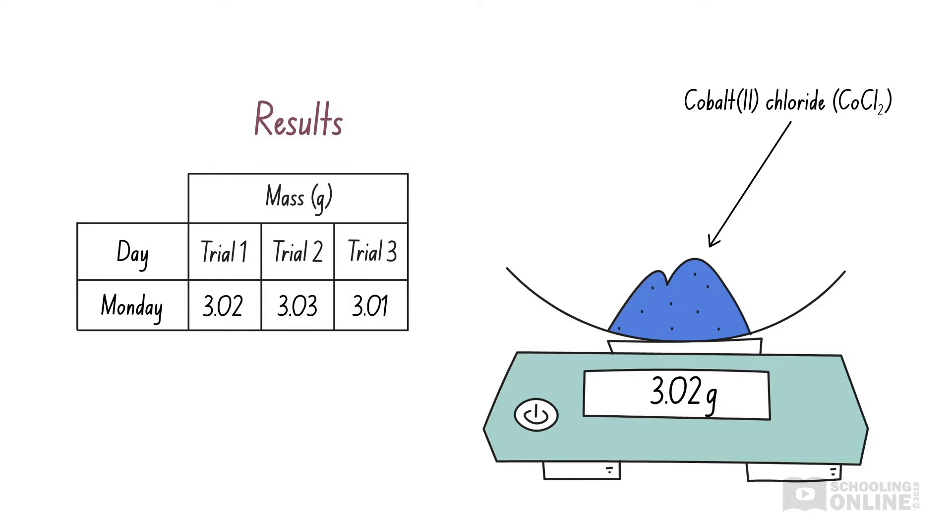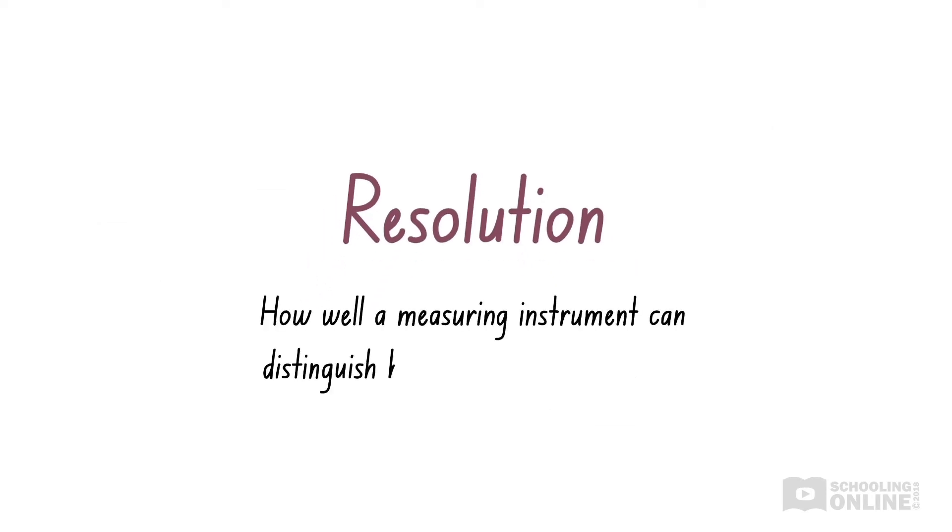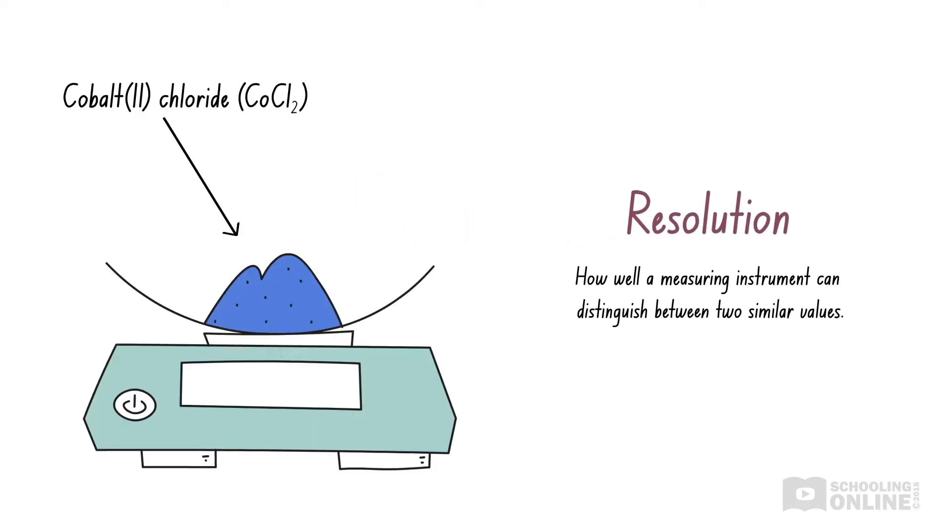As we can see, the measurements taken on Monday only vary by 0.01 to 0.02 grams. We can judge the random error of our experimental measurements by comparing them to the resolution of our measuring instrument. The resolution of an instrument refers to how well the instrument can distinguish between two similar values. In this case, the mass balance measures weight in increments of 0.01 grams, so it is quite accurate and has a high resolution.